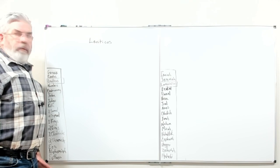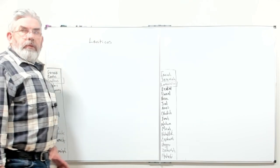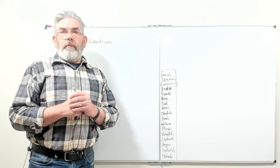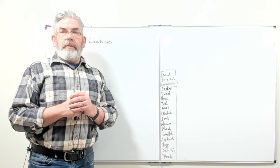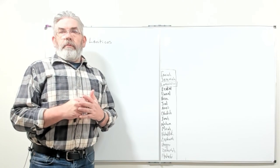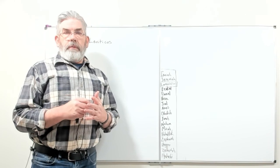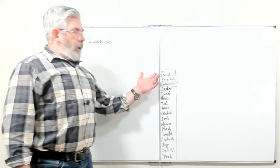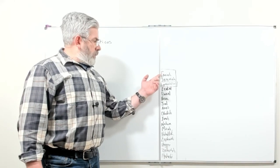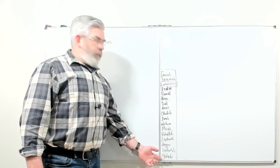After the poetry interlude — which is Job, Psalms, Proverbs, Ecclesiastes, and Song of Songs — you then come to the Prophets, the section of Scripture known as the Prophets. And it's exactly 17 books again, Isaiah through Malachi.